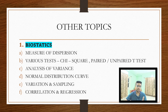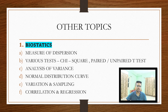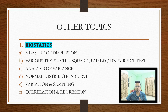From biostatistics, there are six to seven topics you must read: measures of dispersion; various tests like chi-square test, paired and unpaired t-test, analysis of variance; normal distribution curve — very important; variation and sampling; and correlation and regression. These are small topics we miss during preparation, so I've made them separate so you can focus on these while going for the exams.